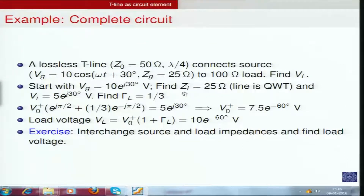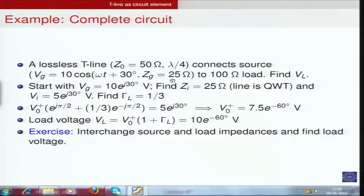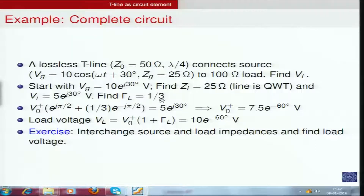With Z_i = 25 ohms and Z_g = 25 ohms, the input voltage is a voltage divider: V_i = 25/(25+25) * V_g = 5*e^(j*30°) volts. The reflection coefficient gamma_L = (100-50)/(100+50) = 50/150 = 1/3, which is real.